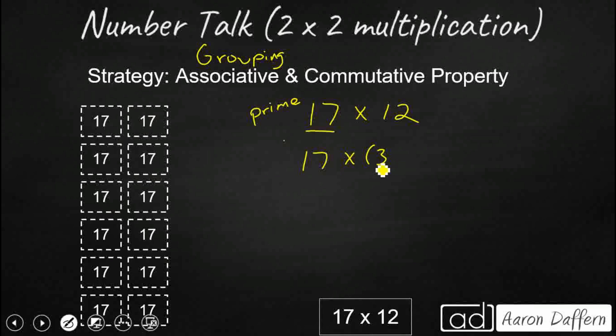So let's take a look at 12. And let's look at it as 2 times 6. So we're going to take our 17 times 2 times 6. And now we've got 3 different factors. And so since we have 3 different factors, we can use the associative grouping property.